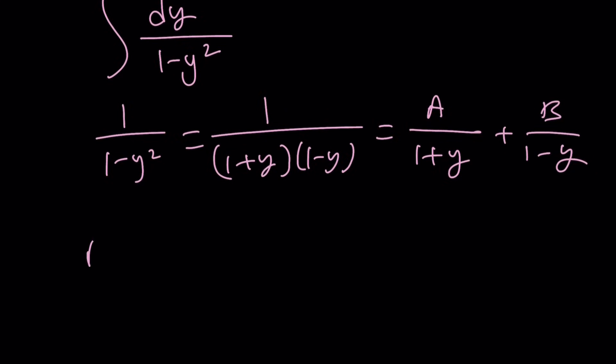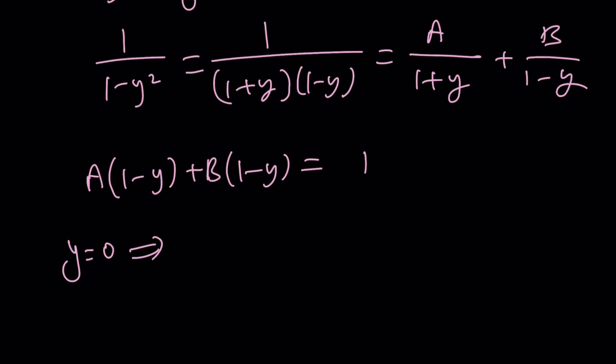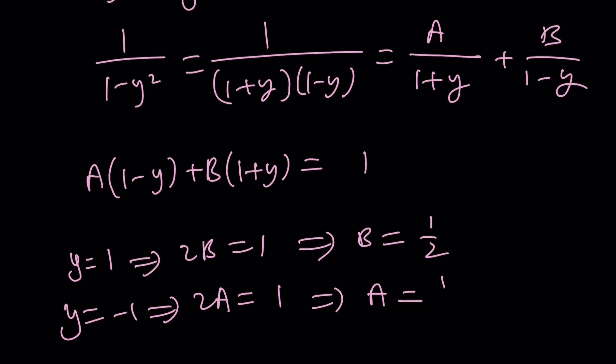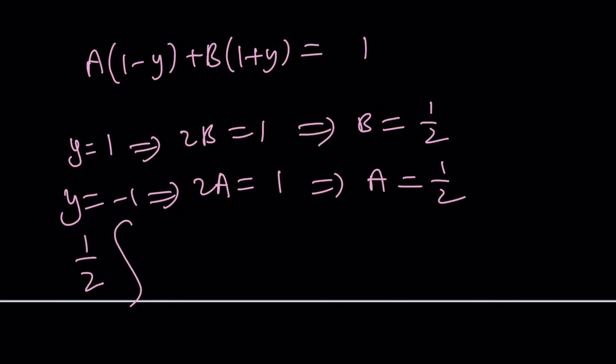Now, by making a common denominator, you should be able to find the values of A and B. And that's actually going to come from replacing y with specific values. If you replace y with 1, this disappears. You get 2B equals 1. B becomes 1 half. If you replace y with negative 1, you get 2A equals 1. And A also becomes 1 half. Which means you can totally pull it out. And if you do, you're going to get something like 1 over 2. And you're going to integrate 1 over 1 plus y plus 1 over 1 minus y dy.